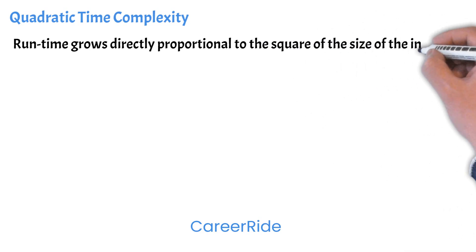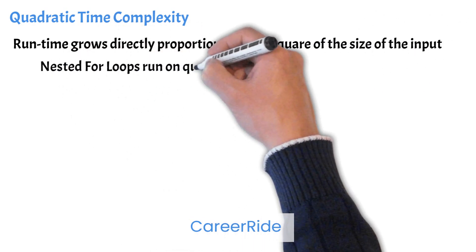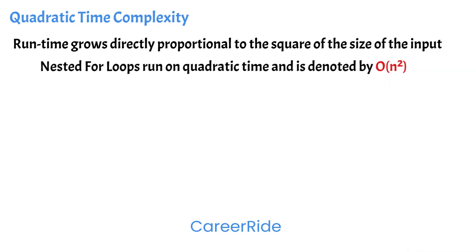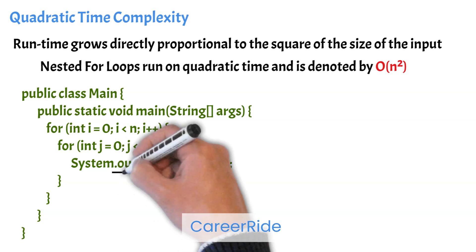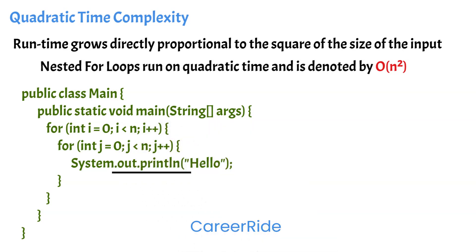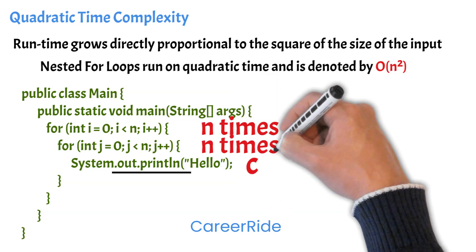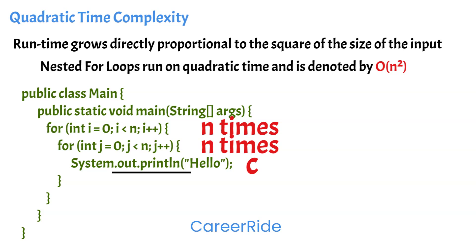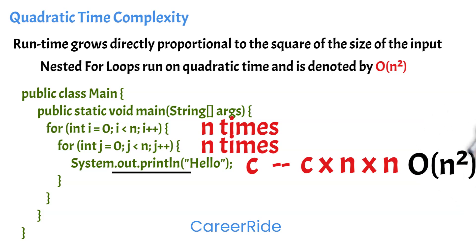Quadratic time complexity: in this type of algorithm, the runtime grows directly proportional to the square of the size of the input. Nested for loops run in quadratic time and are denoted by O(n²). This type of algorithm needs a lot of resources and time. In this example, the print statement takes constant time c. The outer loop runs n times, and for each run the inner loop also runs n times. So the total running time is c × n × n. In Big O terms, we ignore the constant and denote this as O(n²).